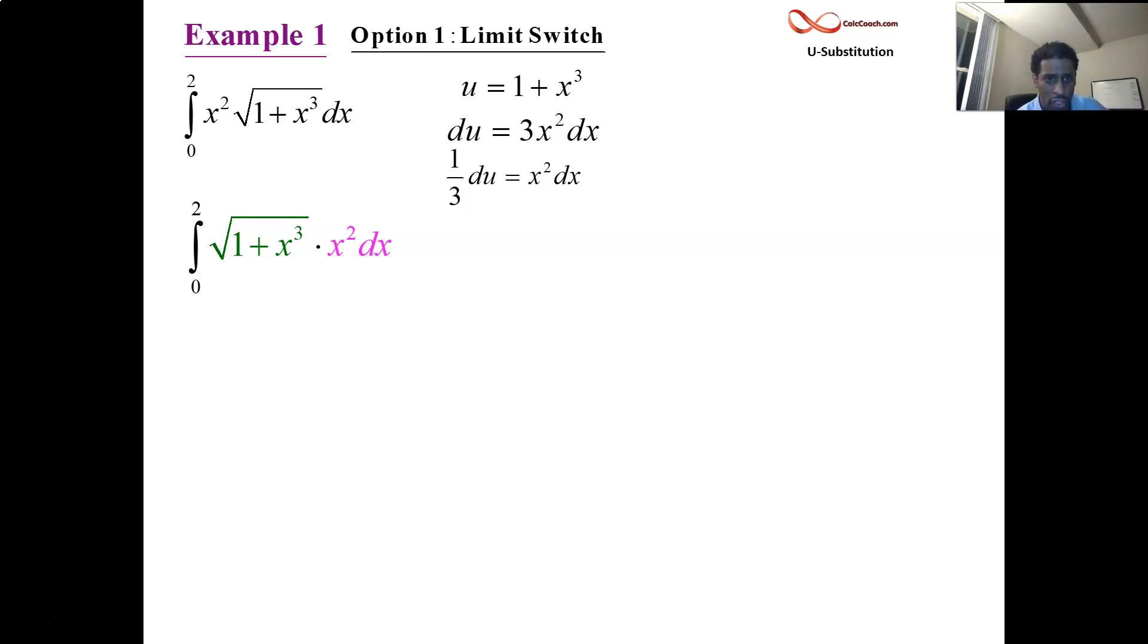This is a good point to do the limit switch. I like doing a nice organized chart. The upper limit is x equals 2, and our lower limit is x equals 0. Our substitution is u equals 1 plus x cubed. Cube the 2 and add 1, you'll have the new u. 8 plus 1 is 9. Cube 0 and add 1, that's just going to be 1. We are ready to write down our new integral with our new bounds. The bounds become 1 and 9.